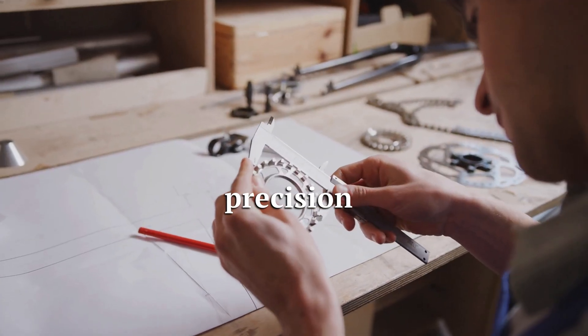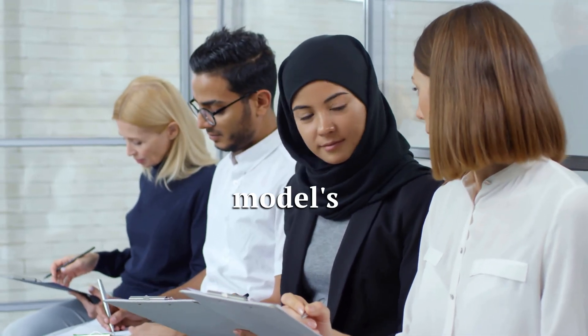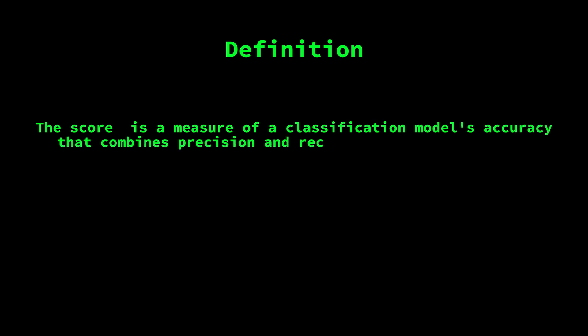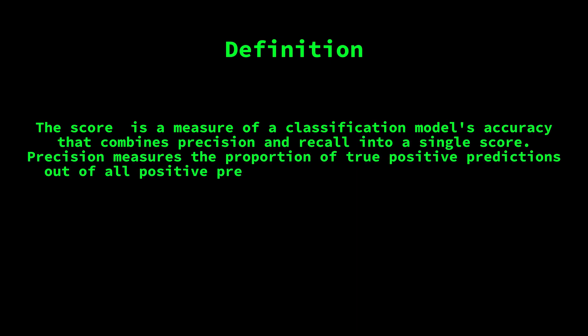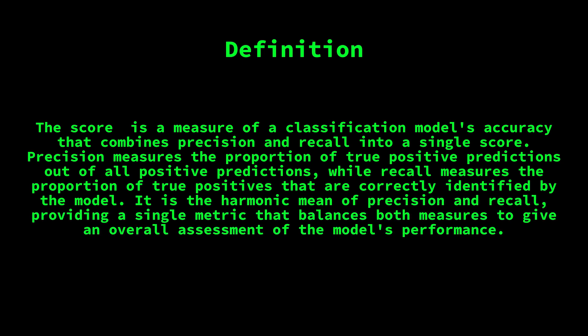The F1 score combines precision and recall, providing a single metric that balances both to give an overall assessment of the model's performance. Precision measures the proportion of true positive predictions out of all positive predictions, while recall measures the proportion of true positives that are correctly identified by the model.